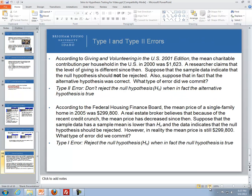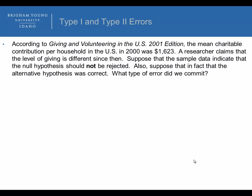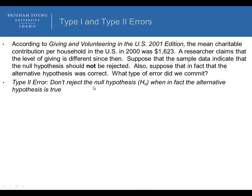For the final examples: in the charitable contribution example, suppose the sample data indicated that the null hypothesis should not be rejected, but in fact the alternative was correct. This means a type 2 error was committed — they failed to reject the null when the alternative was actually true.